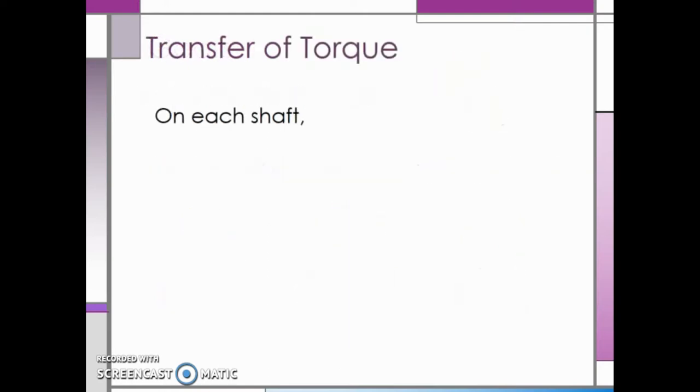In the last section, we discussed torque. Now we are going to look at how torque is transferred between gears. On each shaft connected to a gear, the torque is equal to the force multiplied by the radius, which is a formula we have already seen.